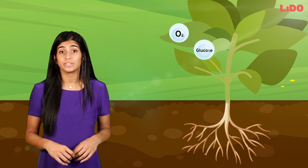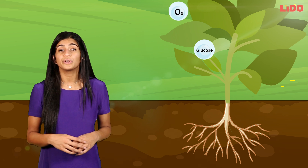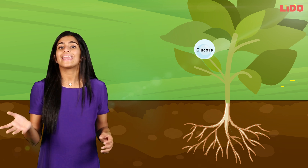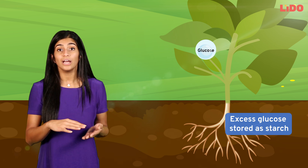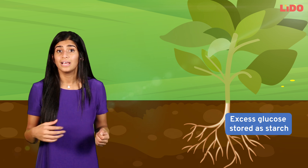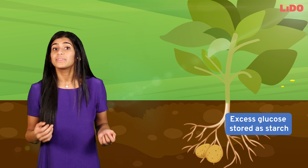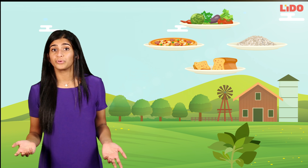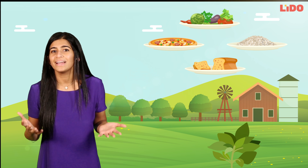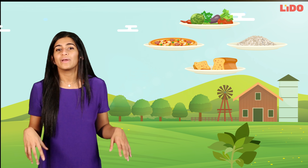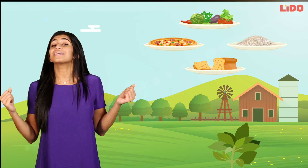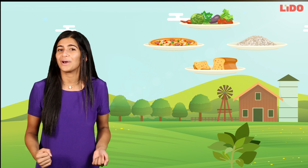The glucose produced during photosynthesis may be used to produce energy for the plant, while excess of it is converted into starch and stored in leaves, roots, etc., such as in potato. The presence of carbohydrates in the form of starch in leaves indicates the occurrence of photosynthesis. When you eat rice, bread, pizza, or even some vegetable or fruit, remember the effort that a plant has gone through to make it. And when you breathe in air containing oxygen, be grateful for the plants around us.